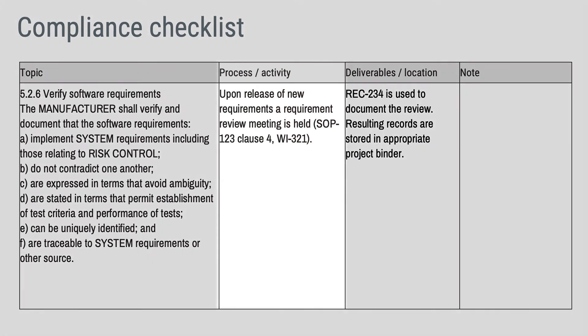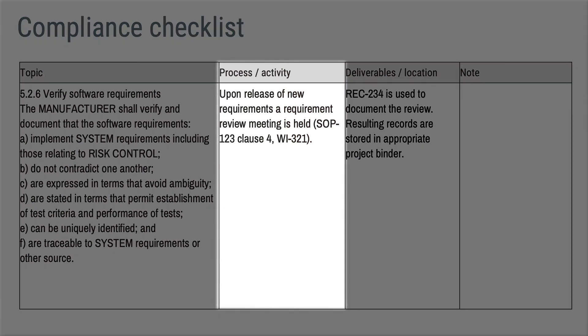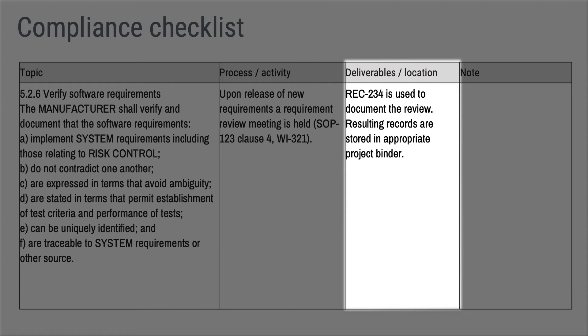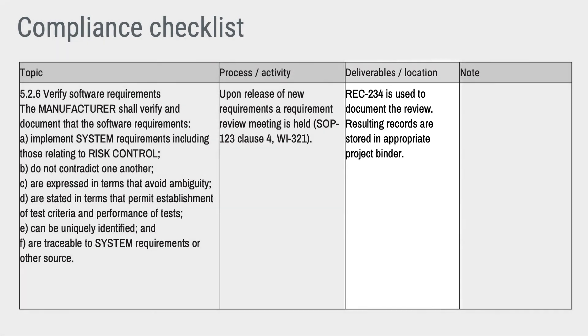Now over to the very same requirement, but with a different approach. For the waterfall approach, I reference an SOP and work instruction on how to conduct verification of requirements. For the deliverables, I provide a template to document the review. For this example, I've assumed a paper-based system so the resulting record will be kept in a physical binder. So with regards to the choice of development method, it is your choice to choose what's appropriate for your organization. But the more you move away from the linear structure of a standard, the more you will benefit from a maintained checklist.